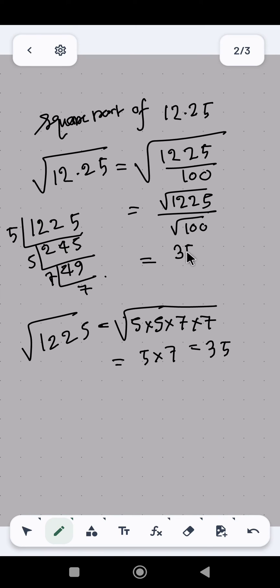So that is 3.5. Okay, so square root of 12.25 is equals to 3.5. Thanks for watching.